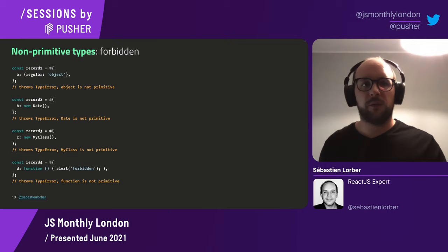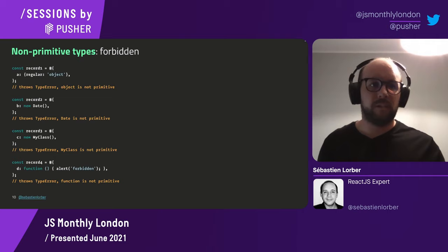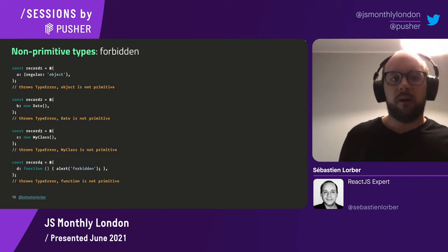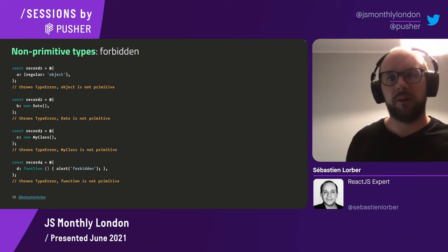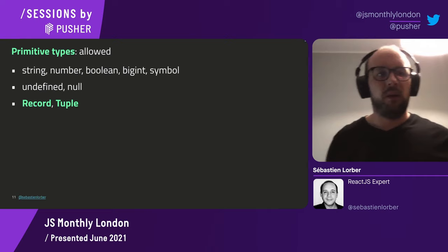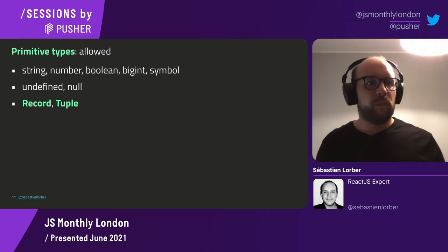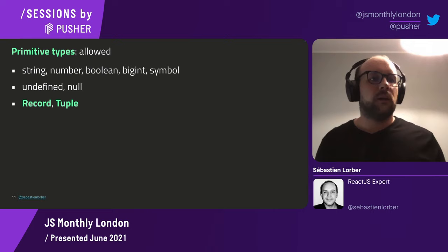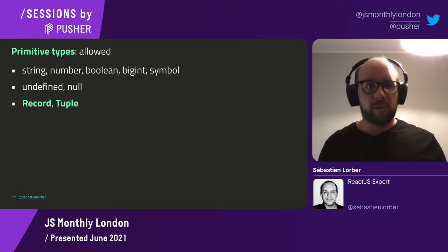The same restriction applies to many types in JavaScript. A Date is not a primitive type, a class is not a primitive type, and a function is also not a primitive type. So what can you put inside a record or tuple? You can put all the primitive types: string, number, boolean, BigInt, symbol, undefined, and null. You can also put records and tuples inside each other, because records and tuples are considered compound primitives — so they are primitives too.